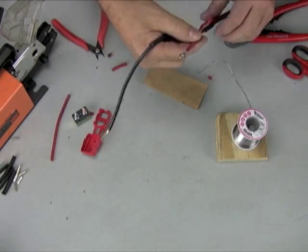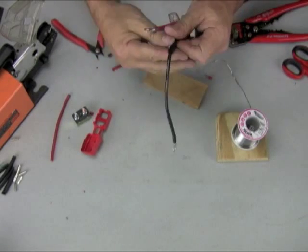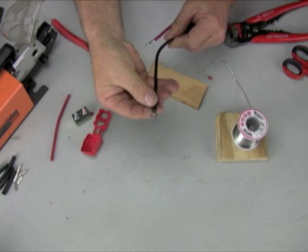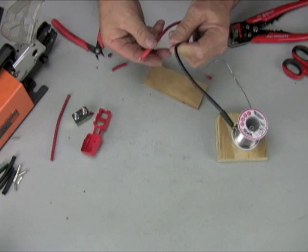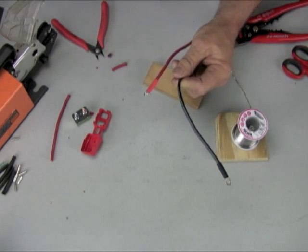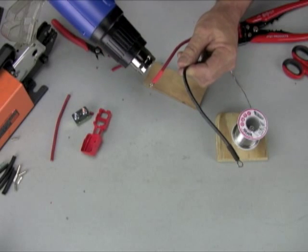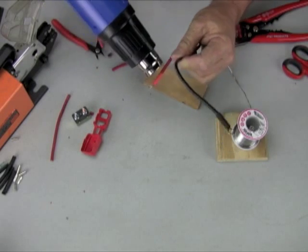We'll move our heat shrink up on that one, like this. You can use a Bic lighter or a match or anything to shrink this heat shrink down.